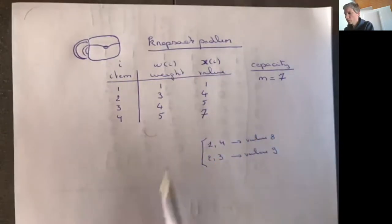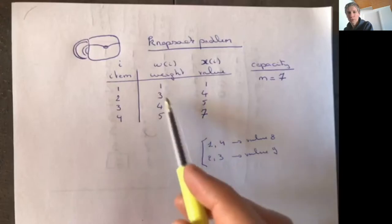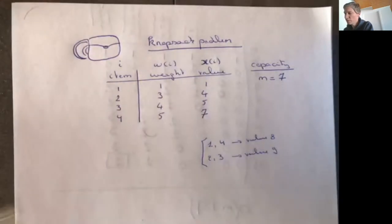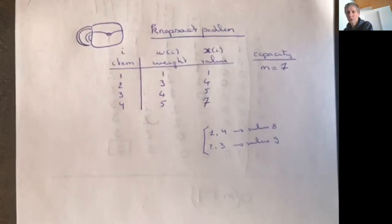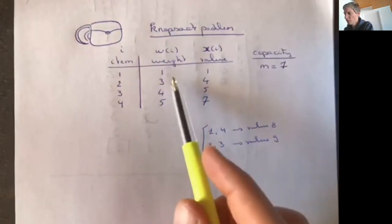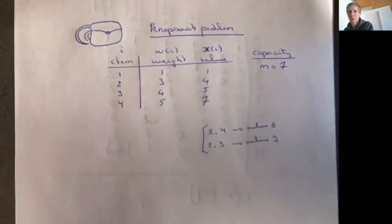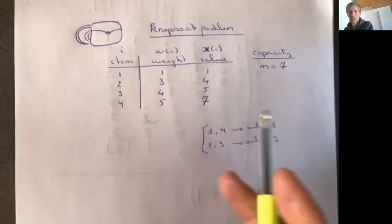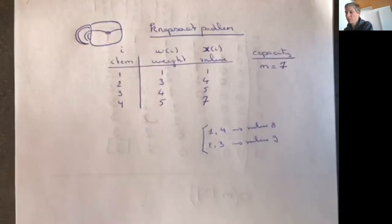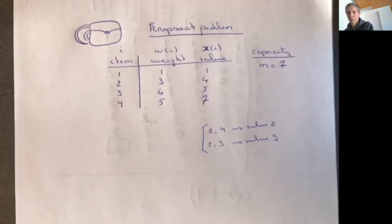One approach is to try every possible combination of items that don't exceed capacity, compute the total value each time, and pick the maximum. Of course, this is very inefficient because the number of subsets can be enormous. With only four items it's manageable, but with 1,000 items, the number of possible subsets is very large.